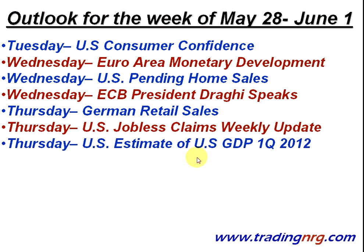On Thursday, there is also the second estimate of the US GDP for the first quarter. In the previous estimate, the annual growth rate of the US economy was 2.2%. If there is a major difference in the second estimate, it could have some ramifications on projections for the future progress of the US economy, as well as short-term effects on Forex and commodities markets.